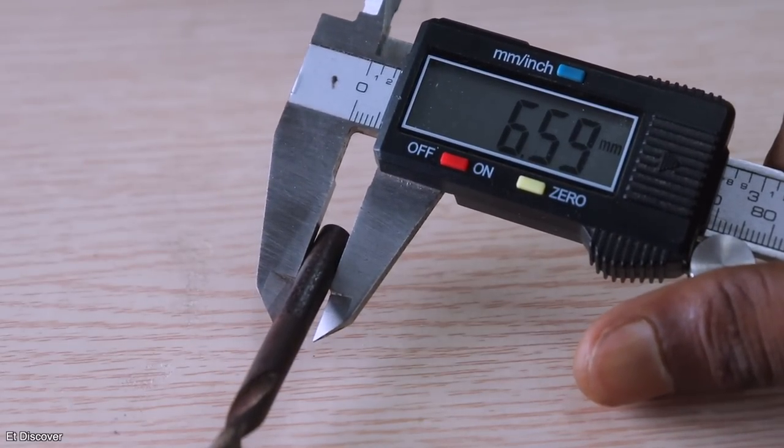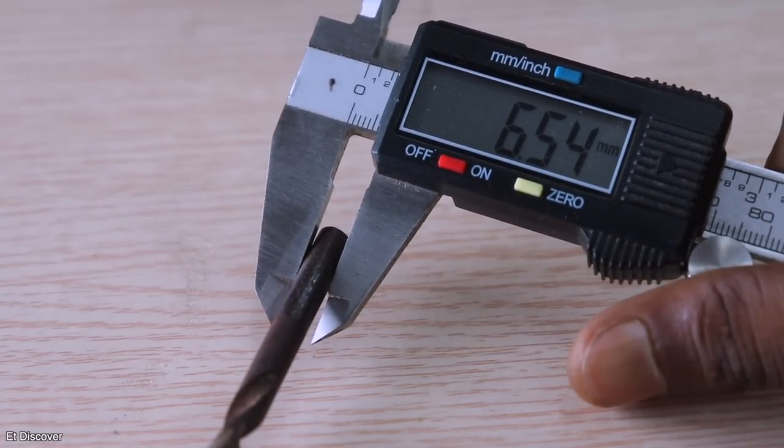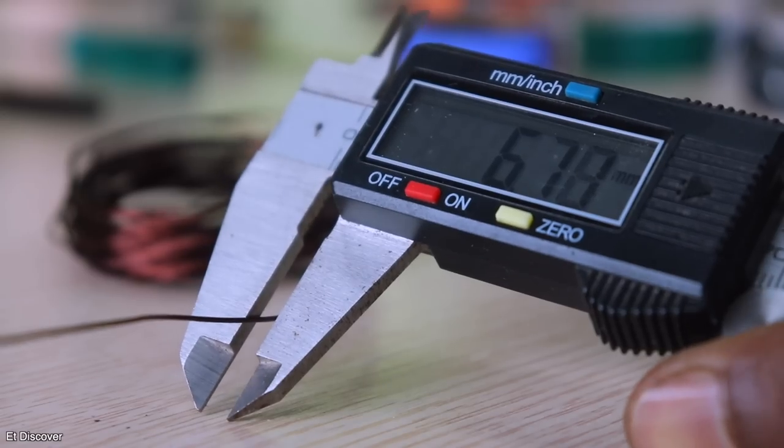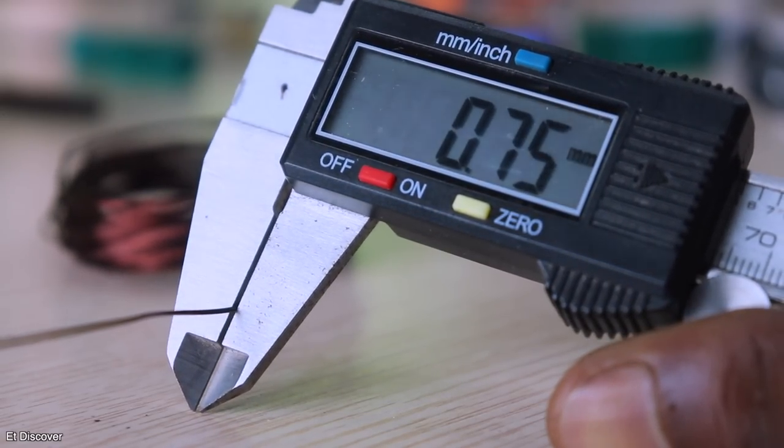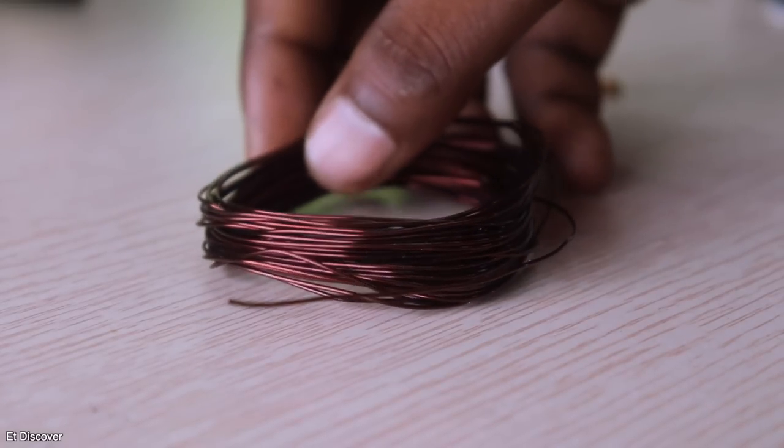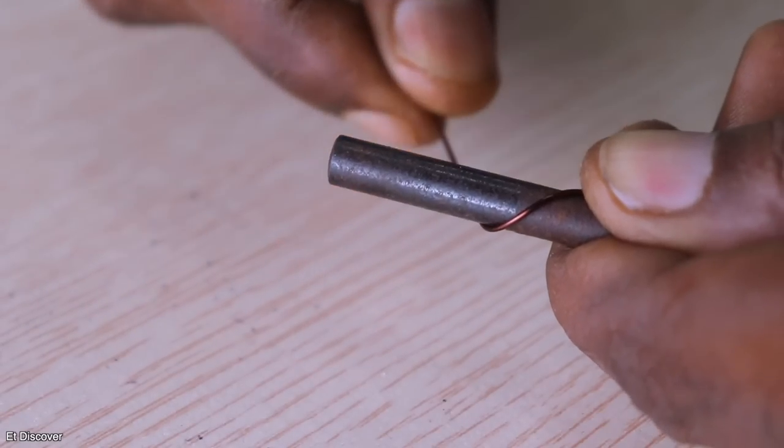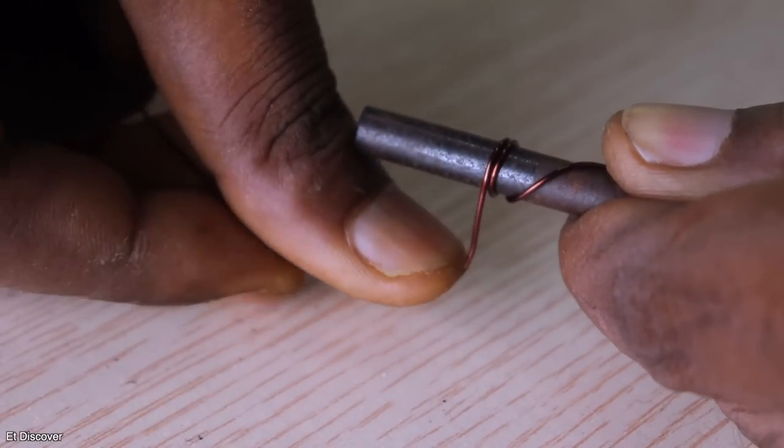So that is why you need 6.5 mm drill bit to make a 100 nanohenry inductor. Here I will use 0.7 mm copper wire, it is also called 22 AWG copper wire. In this drill bit, you have to wrap your coil three times, just like this.